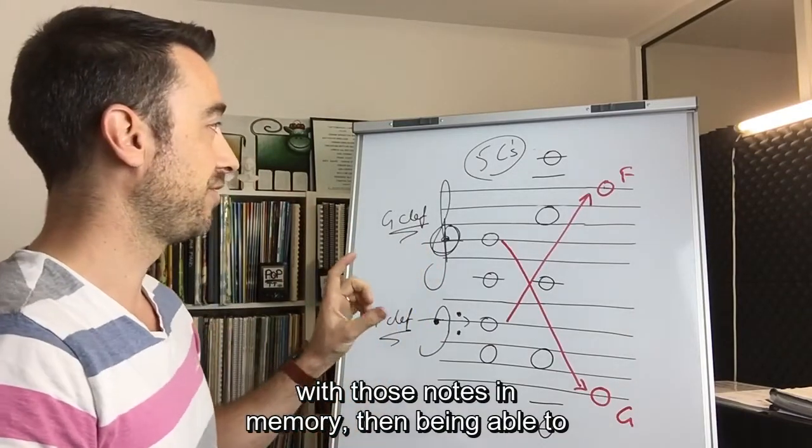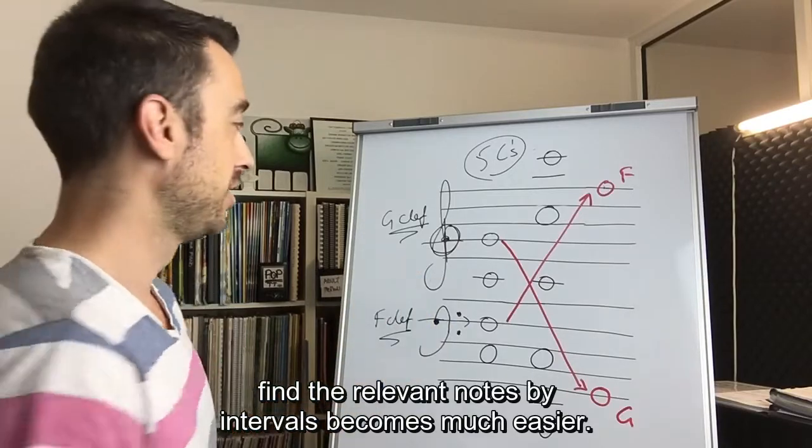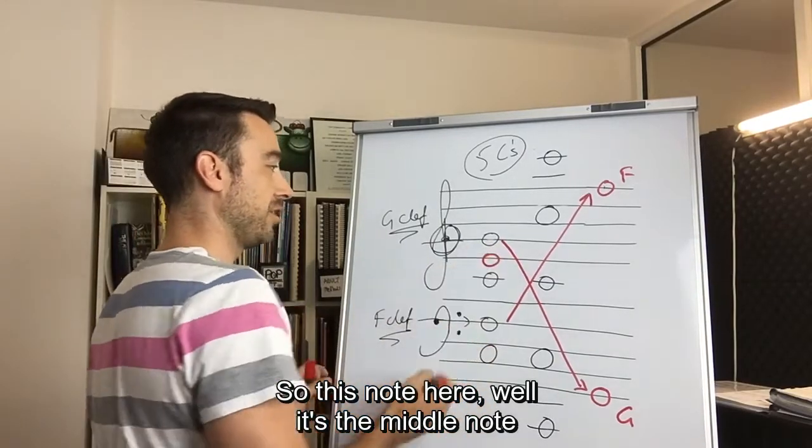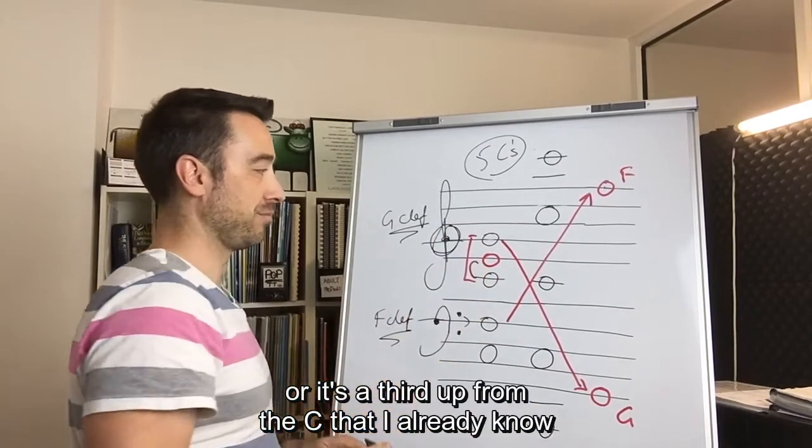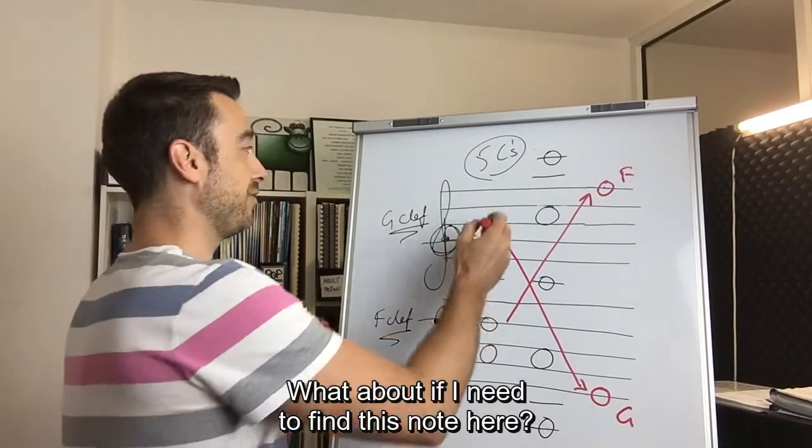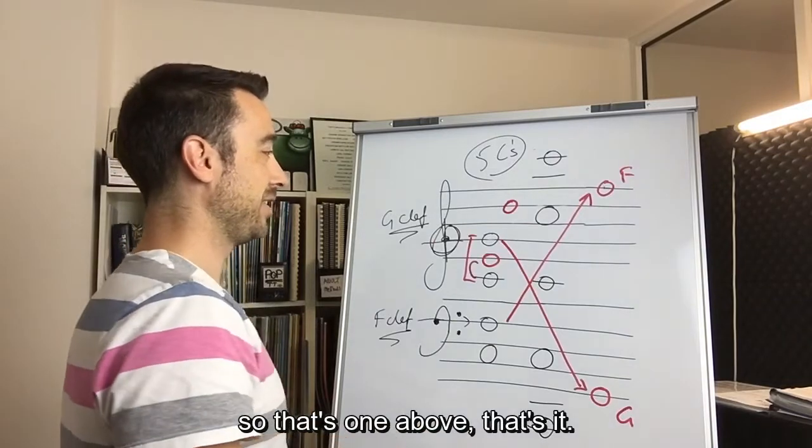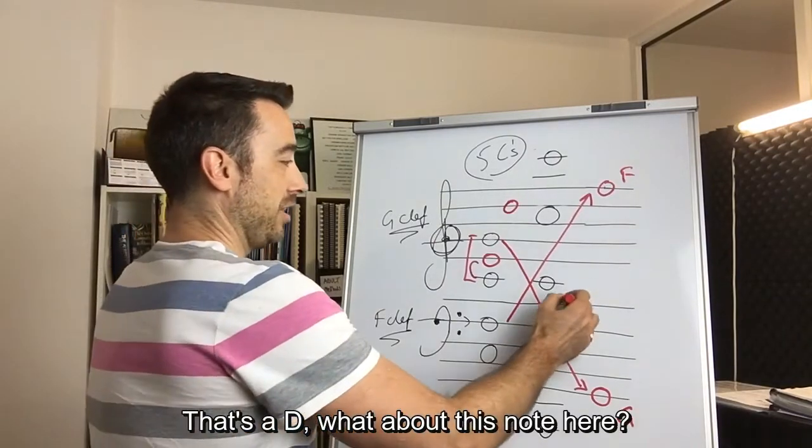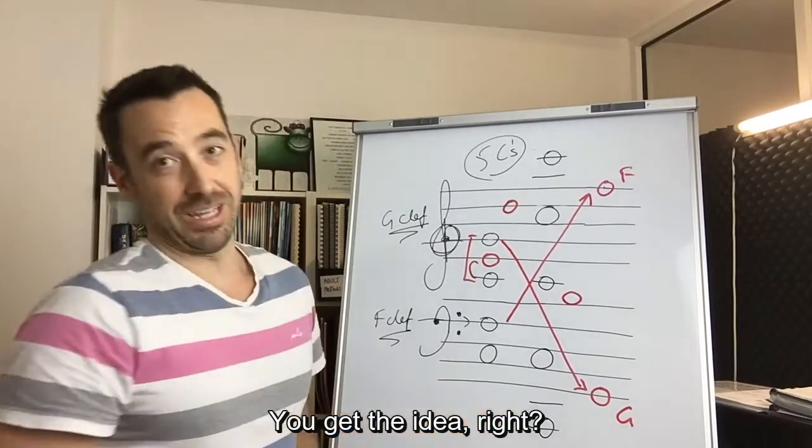So this note here, well, it's the middle note of a triad between these three, or it's a third up from the C that I already know, or it's a third down from the G I know. What about if I need to find this note here? Well, I already know that's a C, so that's one above. That's a D. What about this note here? Well, that's next to the C, so that's easy to remember.